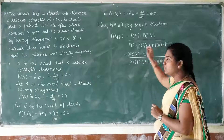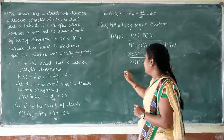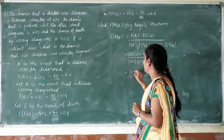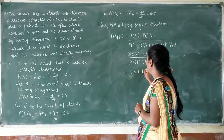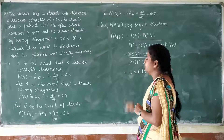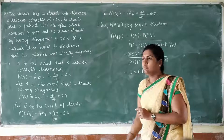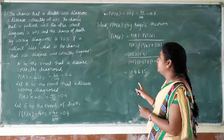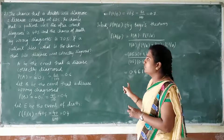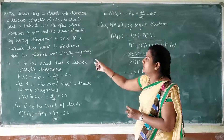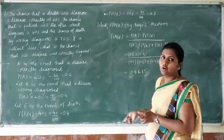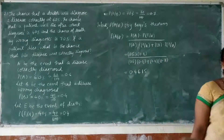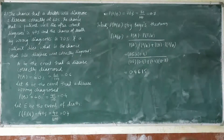After simplifying this, we are getting P of A given E equals 0.4615. The percentage of death after correct diagnosis is approximately 46%.